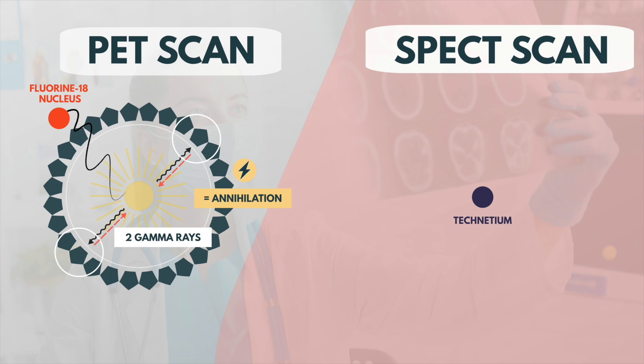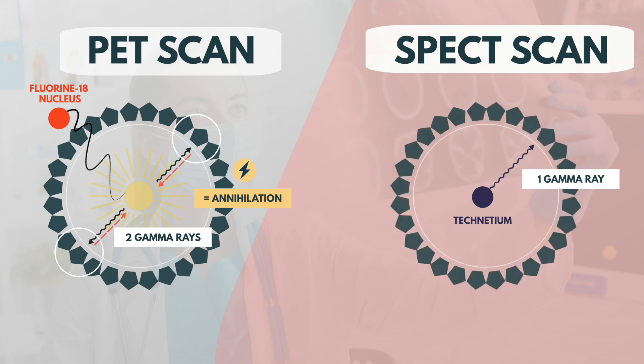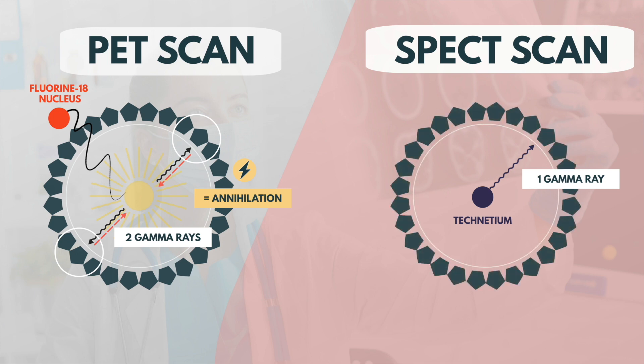Technetium, on the other hand, produces only a single photon of radiation. This photon moves out of the body and is detected by the camera. Combining thousands of these photons ultimately results in image creation.